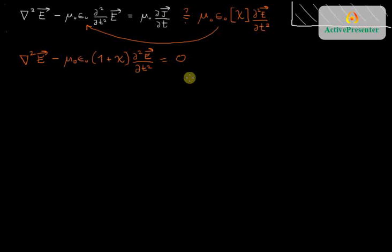And what's really important about this is that this looks the same as in vacuum. It looks the same as the equation we had in vacuum, where we simply set this term to zero. Except the only thing that's changed is that this term is not μ₀ε₀, it's now μ₀ε₀ times one plus χ.